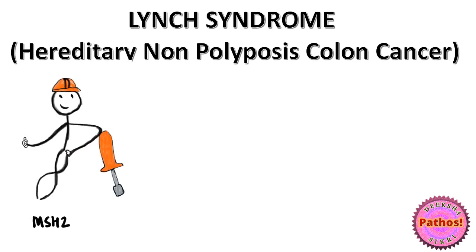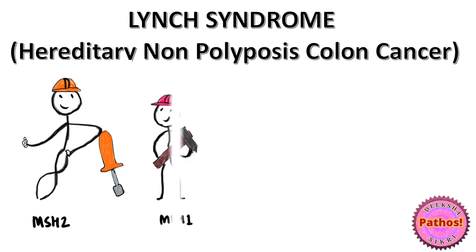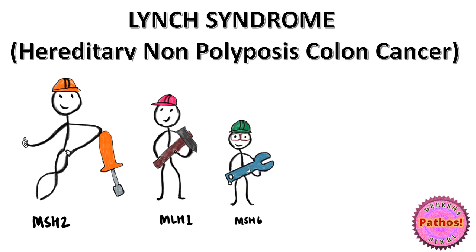As far as risk is concerned, I'd like you to imprint this in your head: MSH2 is associated with maximum risk, MLH1 a little less, even less is MSH6, and finally the least risk is with PMS2.